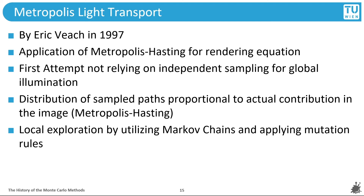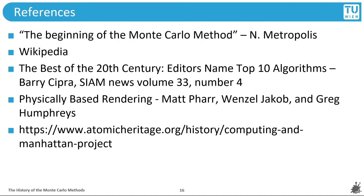MLT is the application of the Metropolis-Hastings algorithm to the rendering equation. Until then, the sampling schemes were based on independent samples. By using Markov Chain Monte Carlo and the short-term memory they provide, MLT can utilize certain mutation rules to propose and explore nearby paths once a light-carrying path from the light to the eye has been found. Using Metropolis-Hastings, it is ensured that the overall distribution of the sample paths is proportional to their contribution to the image, and so a realistic distribution of light within a scene is achieved. This scheme allows a relatively quick convergence even in cases where it is difficult to find the paths — for example, in the case of caustics.